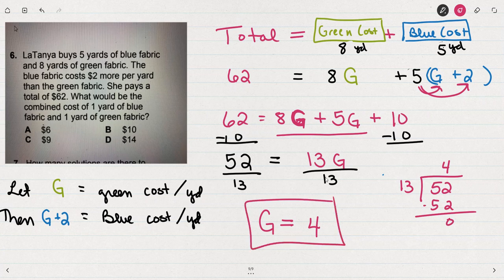I'm not done yet. Because if G is 4, then I need to know that the cost for blue is 4 plus 2, or 6.